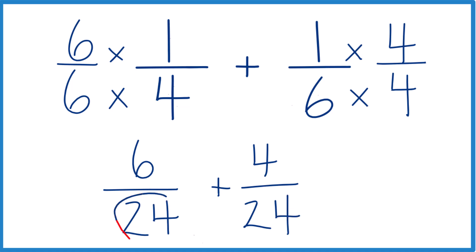So now we have the same denominators. We just add the numerators. So six plus four equals 10. And then when we add fractions, because these are the same, we just keep the denominator the same. 24. And one-fourth plus one-sixth, that's 10 twenty-fourths.